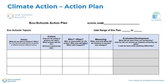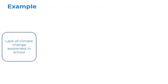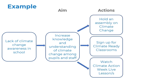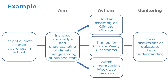Now you have some ideas of what to do for your climate action topic, let's look at how this can translate into your action plan with a couple of examples. In this example we have identified a lack of climate change awareness in our school. Our aim is to increase knowledge and understanding of climate change among pupils and staff. To do this we might hold an assembly on climate change, sign up for climate ready classrooms, or watch climate action week live lessons. We could then use discussions or quizzes in class to check our understanding of climate change.